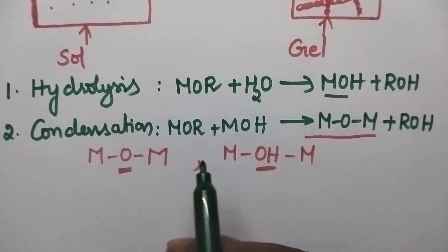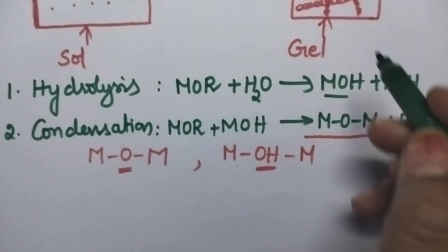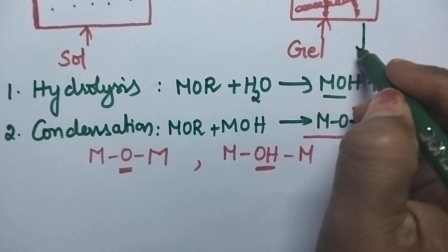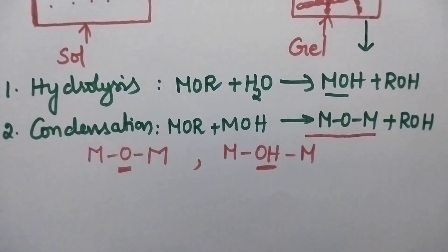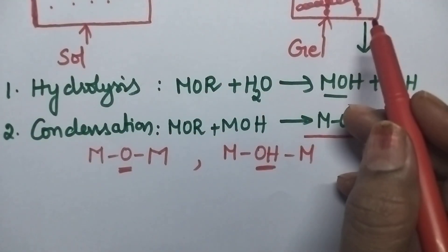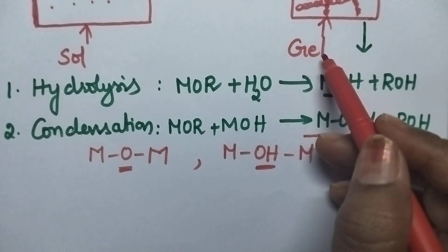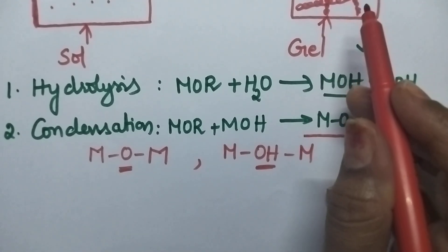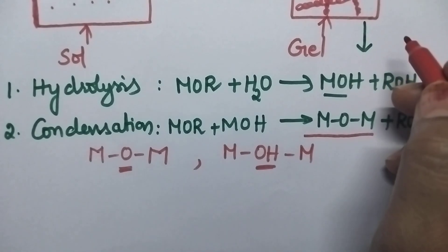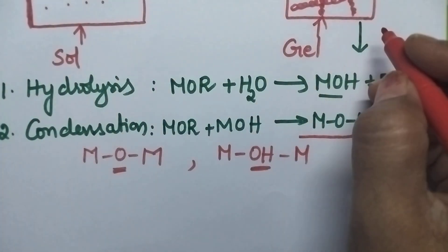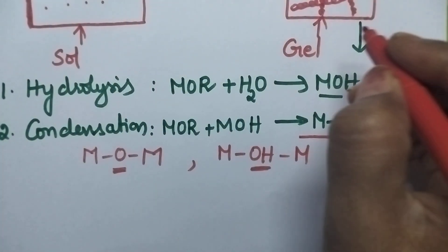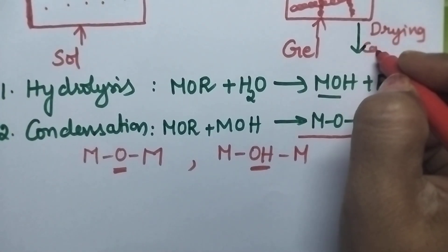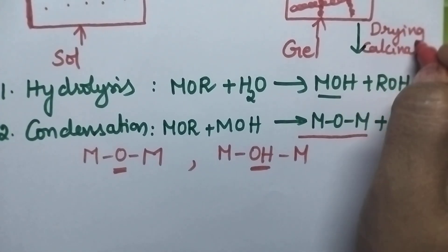So after the condensation process completely the liquid will be evaporated. The liquid phase can be completely evaporated from the Gel. Gel means it is a semi rigid mass. So still it contains liquid phase. So for the complete removal of the liquid from the Gel it should be evaporated through drying process followed by calcination.